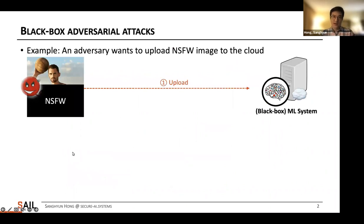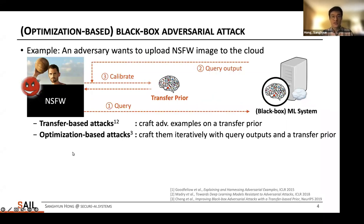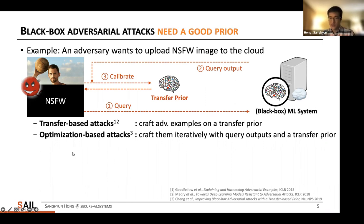Imagine an adversary who wants to bypass a black-box machine learning model for content moderation and upload inappropriate images to the public cloud. One way to achieve this goal is to exploit the transferability phenomenon. The attacker crafts adversarial examples on a white-box surrogate model, which is a transfer prior, and uses them to fool the original black-box model. Or the attacker can exploit query outputs: they first query the model with adversarial examples, exploit query outputs and a transfer prior to calibrate the adversarial examples, and perform this attack iteratively until successful. To win this security game, it is very important to have a good prior, and this is typically a challenging step for the adversary.